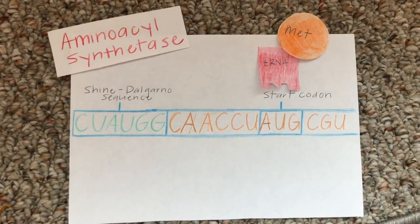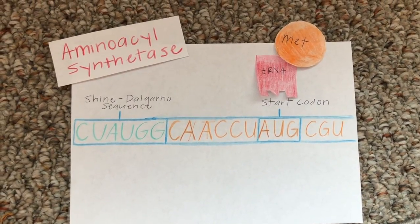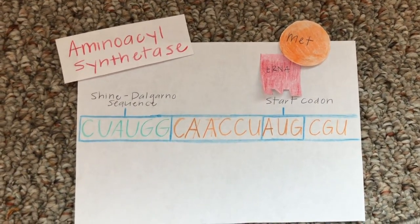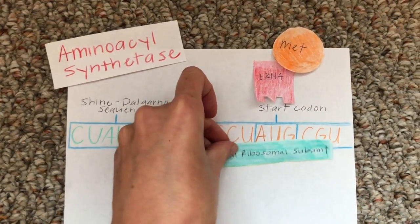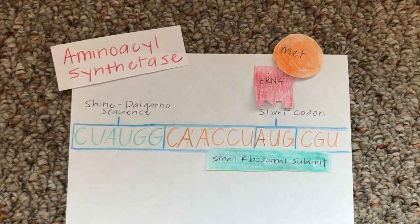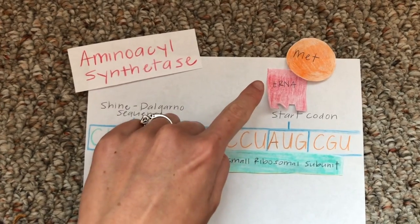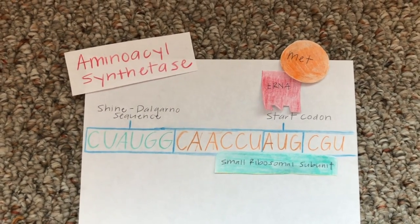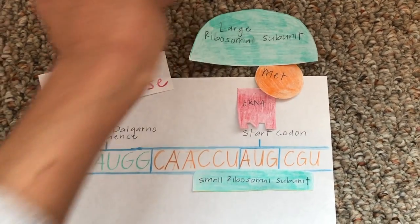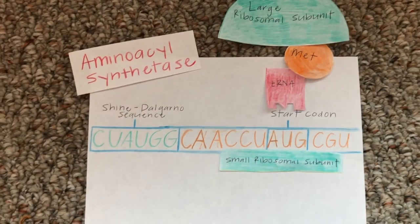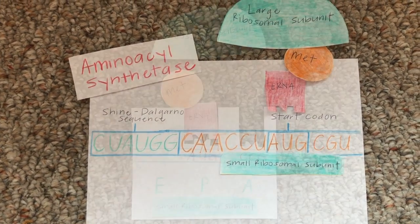During the initiation phase, the small ribosomal subunit is led by its base pair, the Shine-Dalgarno sequence, to position itself over the start codon of the mRNA sequence. The charged tRNA then arrives at the start codon, where the large ribosomal subunit joins with the small ribosomal subunit to integrate the mRNA and tRNA at the start codon.